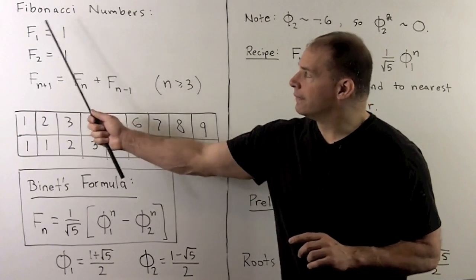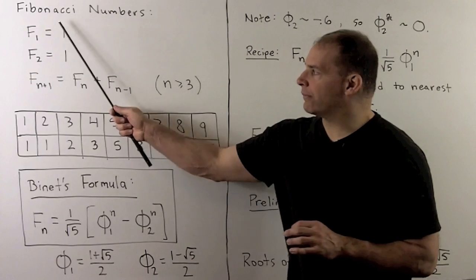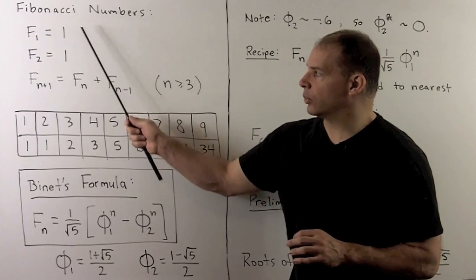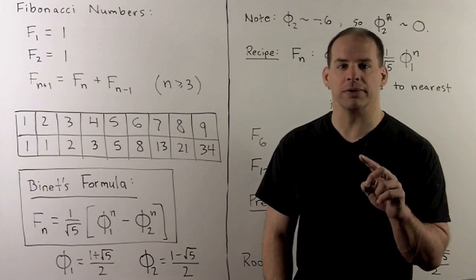Now, the Fibonacci numbers, you may have seen these before. The first two numbers, F1 and F2, we'll define to be equal to 1. Then, to get successive Fibonacci numbers, we define them recursively.